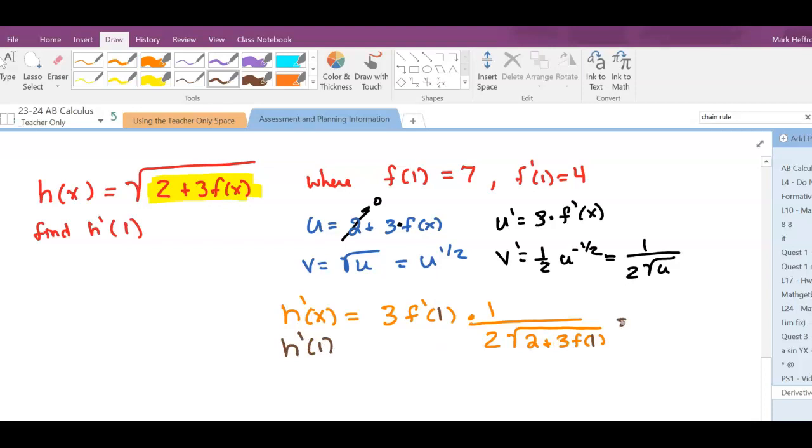So I want 3 times f prime at 1, well that's 4, times 1 over 2 times the square root of 2 plus 3 times f of 1 was 7.